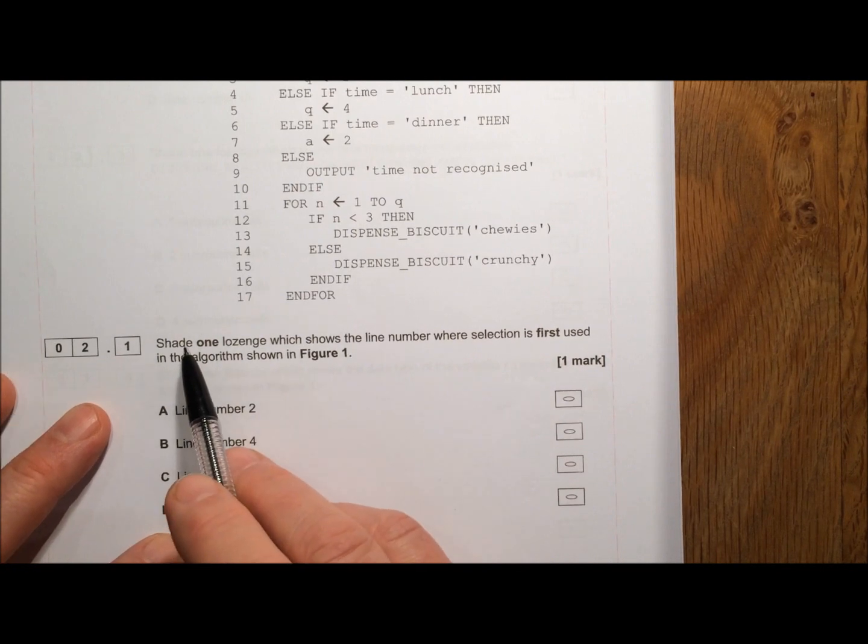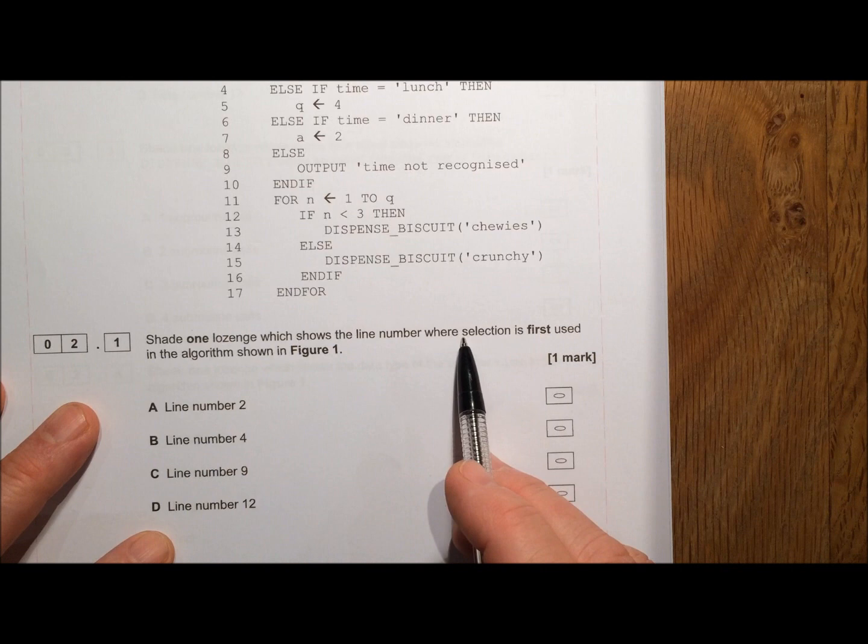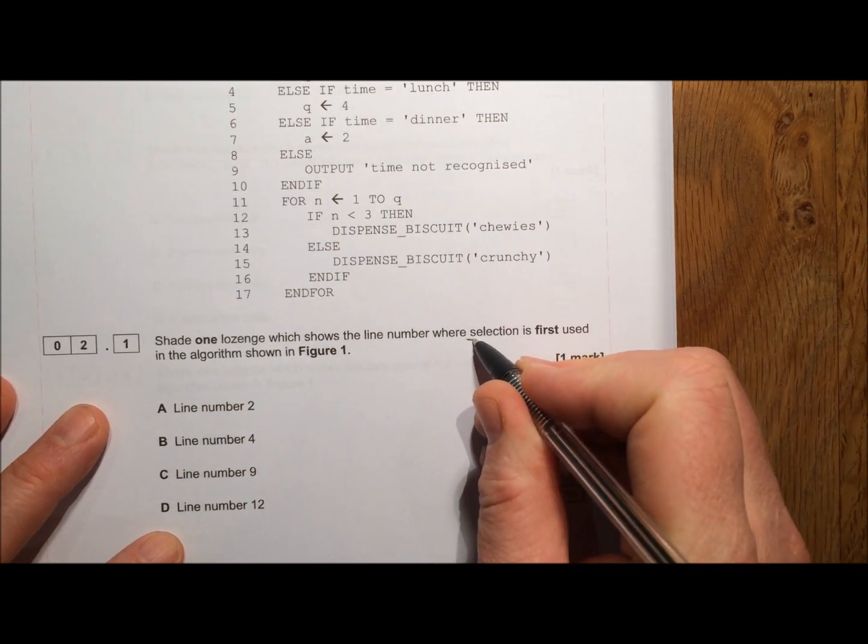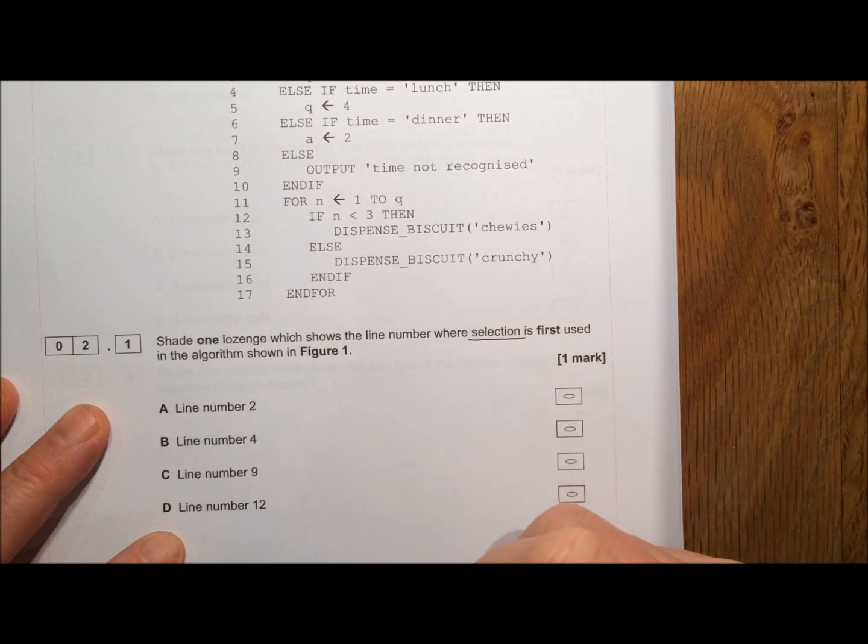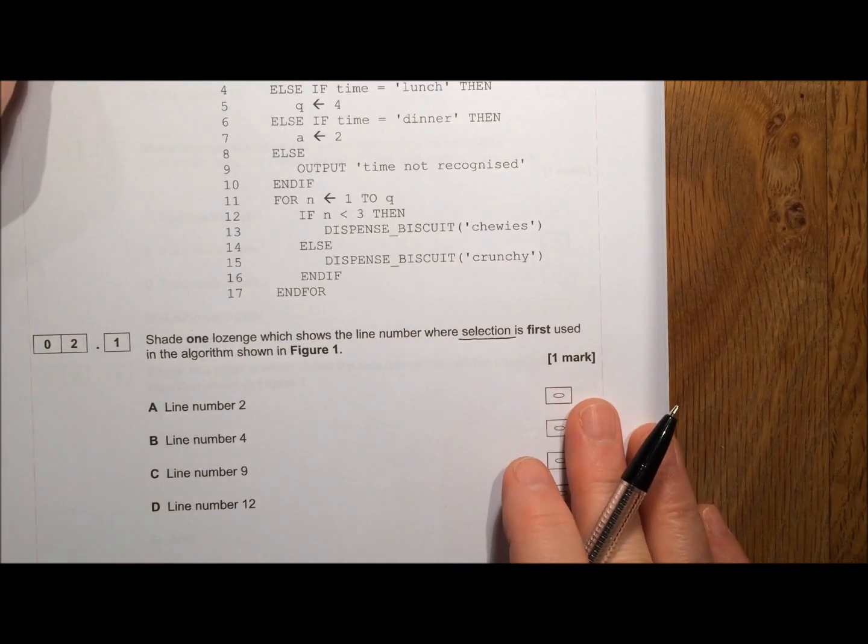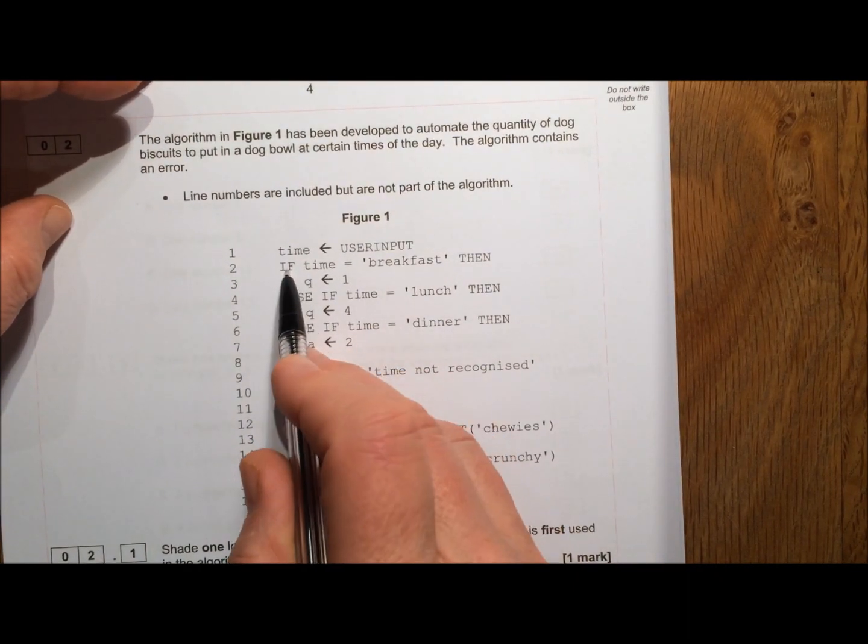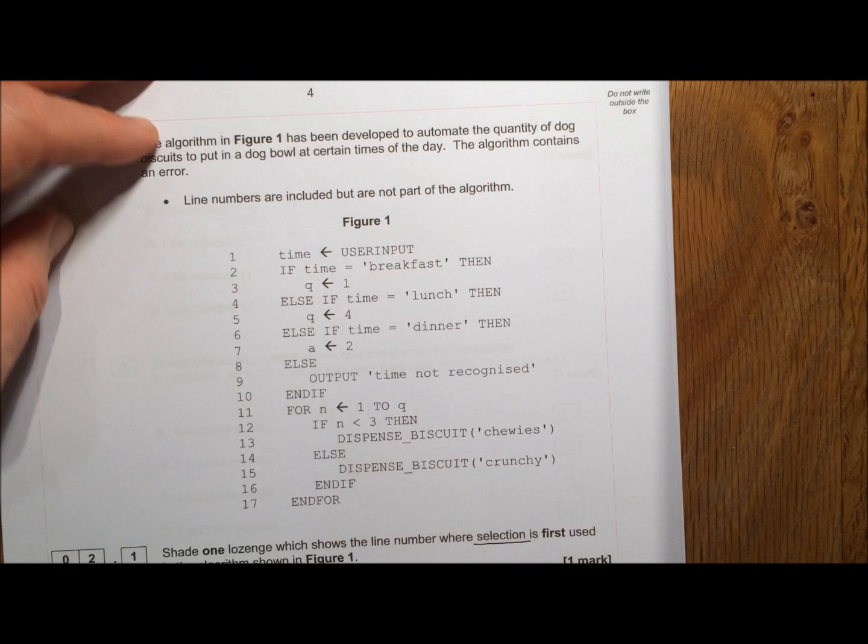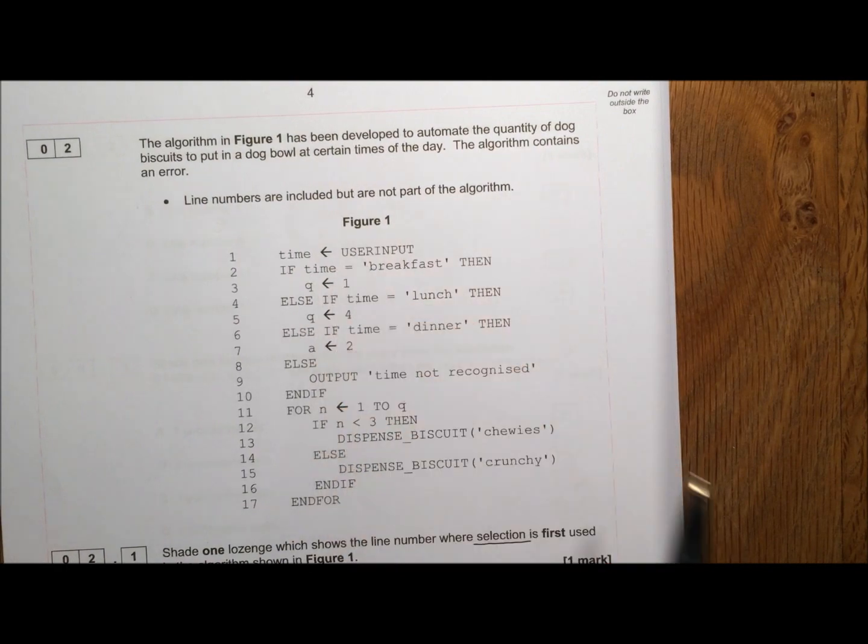So first question. Shade one lozenge which shows the line number where selection is first used. Selection is a decision made between two choices. So selection we always see where the word if occurs. So if has first occurred here, so it occurs first in line number 2. Selection is if.